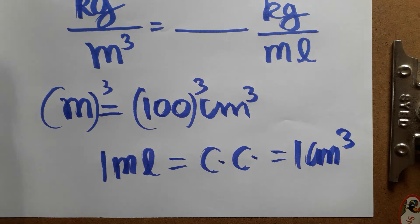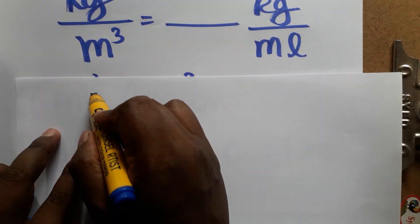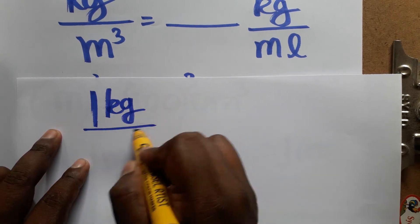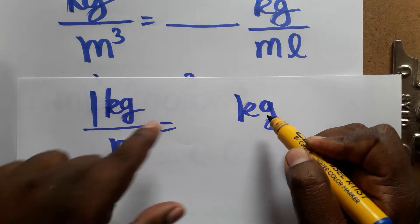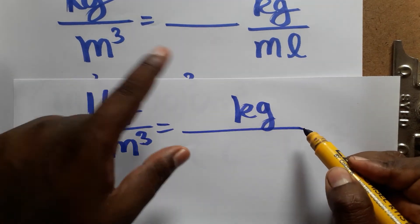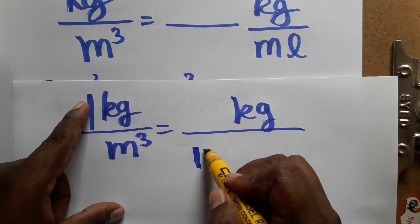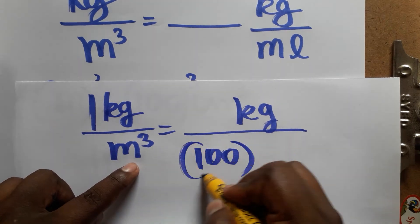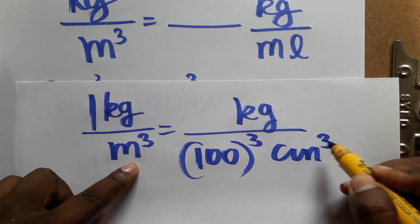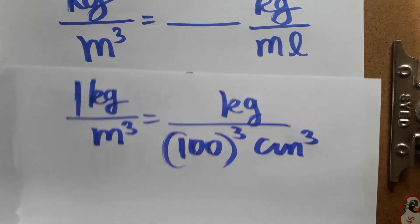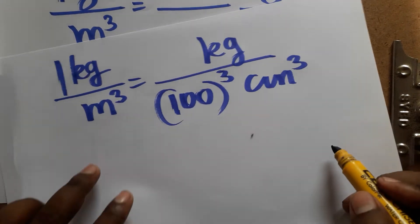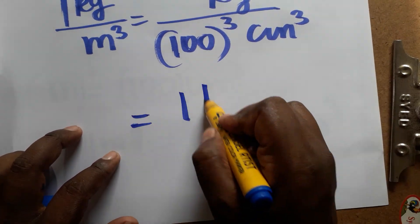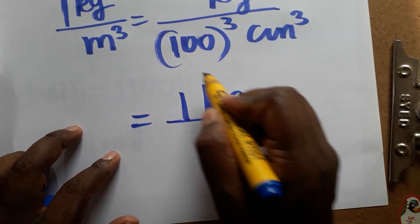So one centimeter cube can be taken as one ml. Now, 1 kg divided by meter cube: we are not changing the kg unit. We are converting meter cube as centimeter — it's 100 centimeter — so because of that, it becomes 100 cubed centimeter cube. One centimeter cube is called cc, which is ml.